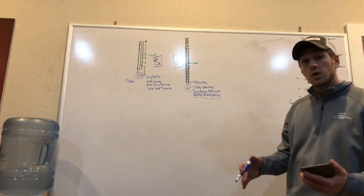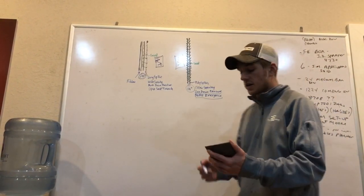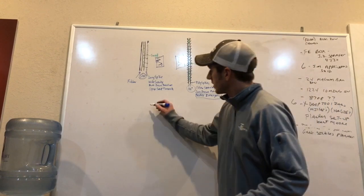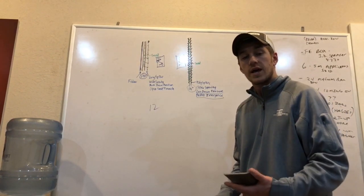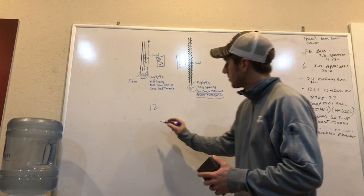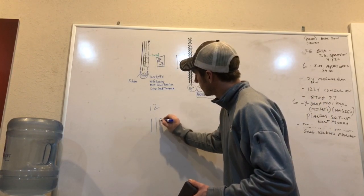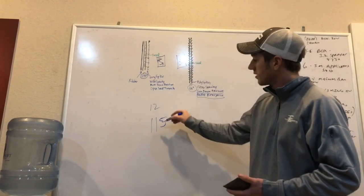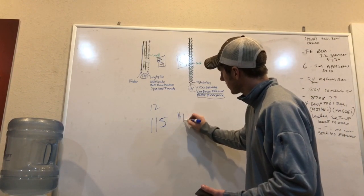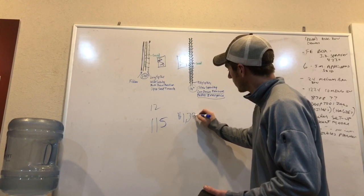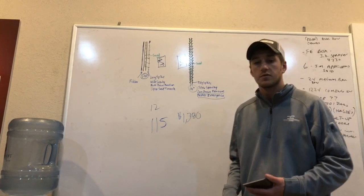So, if we want to run the return on investment on these Yetter Poly Spike closing wheels, let's say we outfit your 12-row planter with just the rings. Today, Fennig Equipment is selling the poly spike rings for $115 a row. So, $115 times 12 is a total investment of $1,380 for your planter.